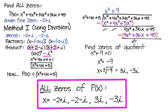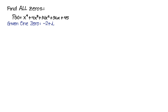Now this was just Method 1 — doing this problem with long division. We took the two complex factors, multiplied them to find a quadratic divisor, and did long division. Method 2 for the same problem uses synthetic division.